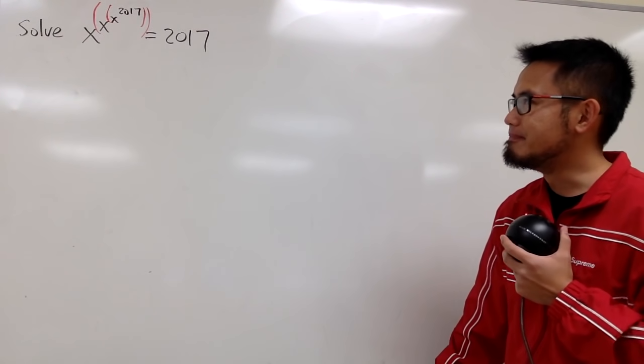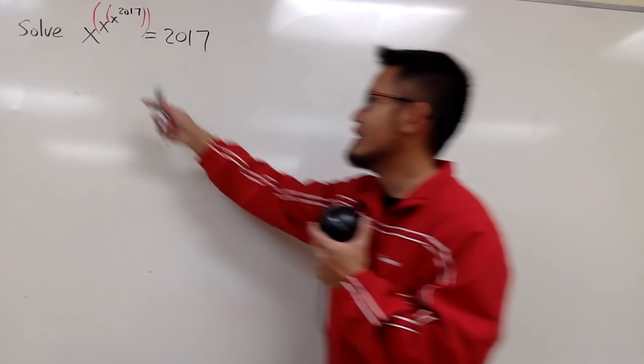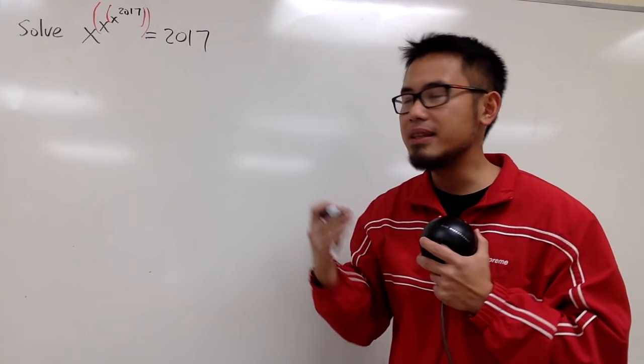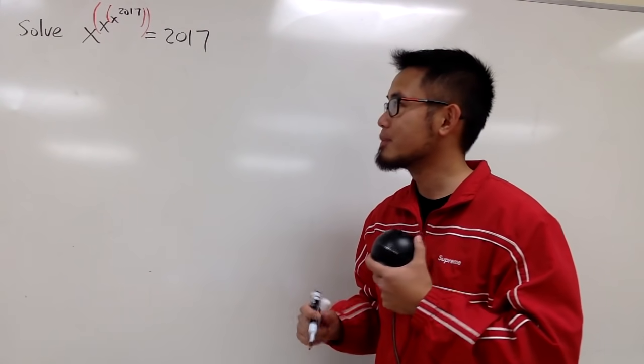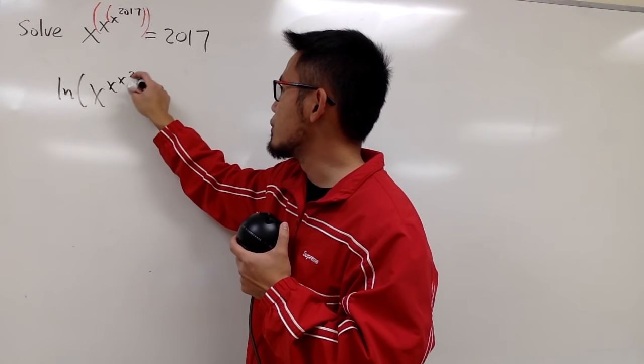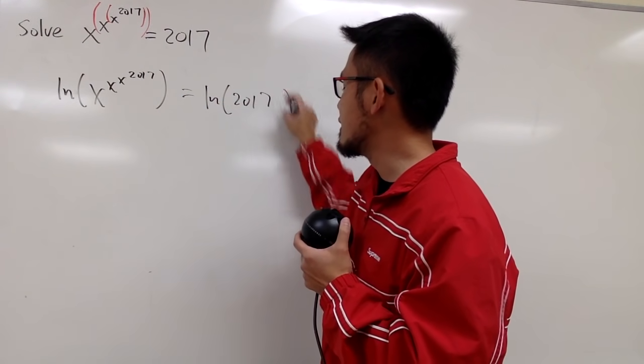Anyway, how can we start with this, though? We have x to the x to the x to the 2017th power. Can we just take the ln on both sides? Okay, let's try. When I do that, I will have ln of x to the x to the x to the 2017th power, and that's equal to ln of 2017.